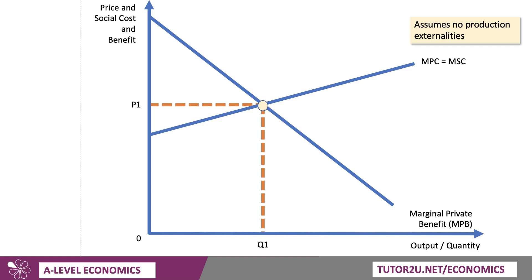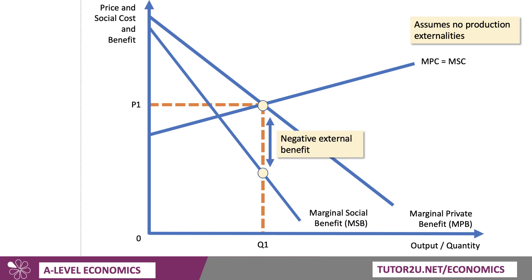There you have your downward sloping demand curve — the private benefit curve. But with negative consumption externalities, there's a negative external benefit, so MSB lies below MPB. There's that gap at Q1, which is the private optimum — that vertical distance is the negative external benefit.